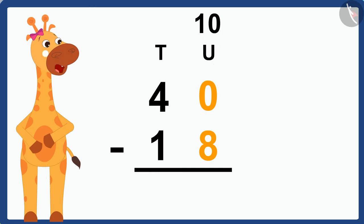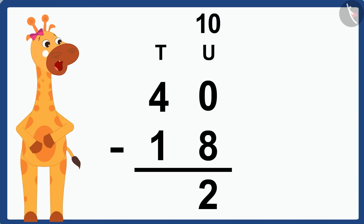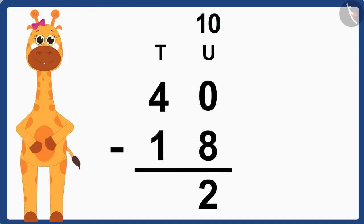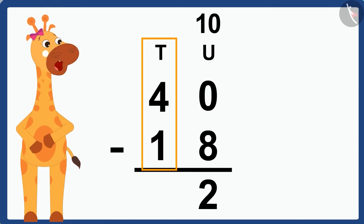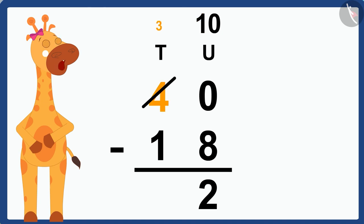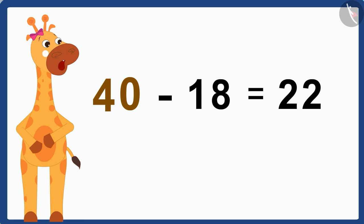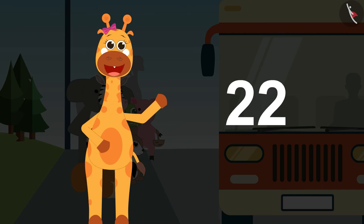That way, the number 0 becomes the number 10. And then if I subtract 8 from 10, I will get 2. I will write this 2 under the unit's place. 40 minus 18 is 22. There are 22 animals left at the bus stop.